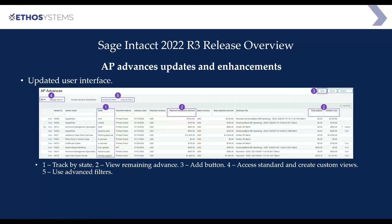First up is the updated user interface. You will notice some things in regards to advances that have been changed — they've made it a more robust feature. You can add AP advances with more clarity as to how they're getting applied and how they're getting created. You can track by the state of the advance — whether it's posted, voided, pending, etc. — and view how much is remaining to apply of that advance.